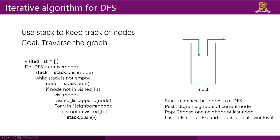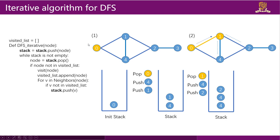In the iterative DFS code, for each neighbor of the current node we push it onto the stack. When we want to choose a node to visit, we pop a node from the stack. The last-in-first-out manner automatically chooses the node we found most recently. Similar to the recursive function, we also maintain a visited list to avoid visiting a node twice.